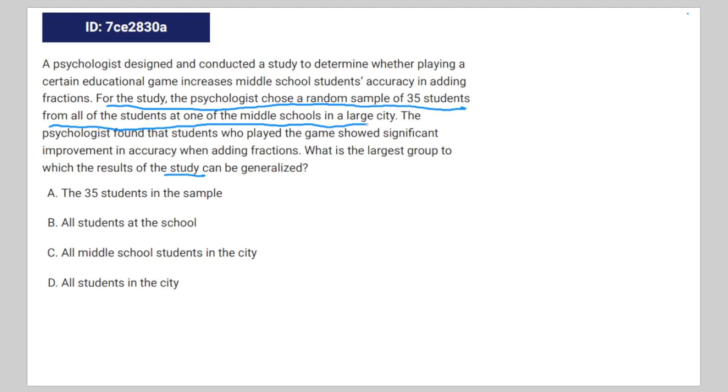And what you really have to understand for these type of questions is one very simple principle. Whenever you take a random sample from a certain population, in this case, the 35 students would be the random sample.